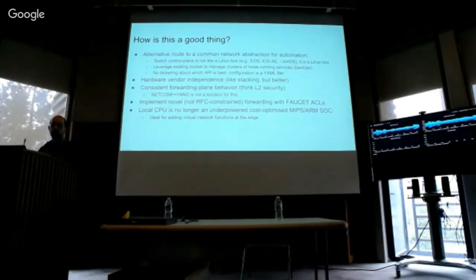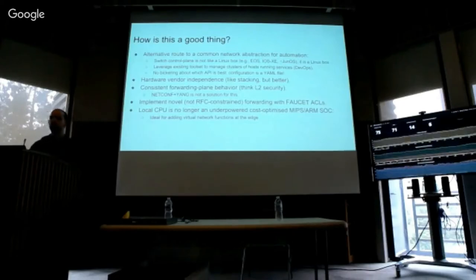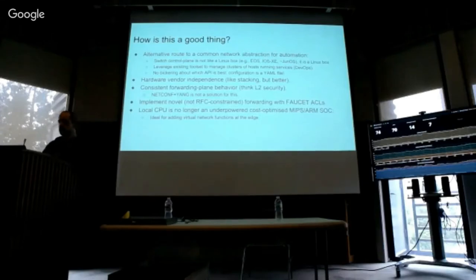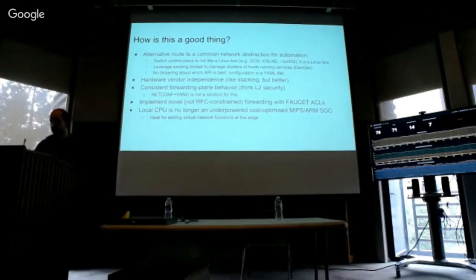We have a multi-vendor network here. It has been great for getting good pricing out of vendors, but it's been terrible for managing the network. I'm particularly interested in consistent forwarding plane behavior — we can define models for configuring equipment from different vendors, but if their interpretation of behavior differs between vendors, those models are meaningless. We see this in layer two security features not well-defined in RFCs or IEEE standards — take the layer two snooping feature for DHCP: different vendors implement that differently.